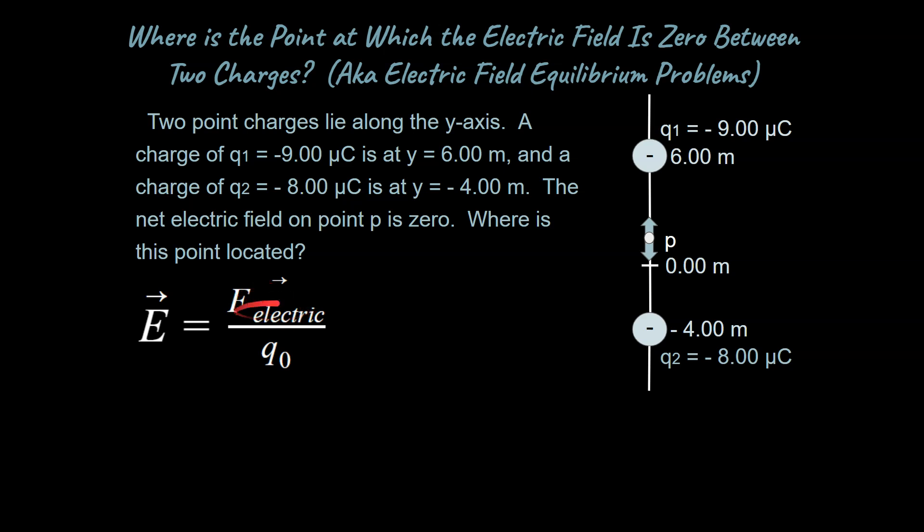And if that charged object, we'll call Q naught, that's like our small, usually positive test charge, but it could be, in this case, it could be negative as well. You would just have to reverse the direction of the electric field. In any case, that's our definition of what we mean by an electric field.